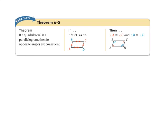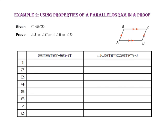In Theorem 6-5, if a quadrilateral is a parallelogram, then its opposite angles are congruent. Since quadrilateral ABCD is a parallelogram, angle A is congruent to angle C and angle B is congruent to angle D. In Example 2, we will use the properties of a parallelogram to prove that angle A is congruent to angle C and angle B is congruent to angle D.